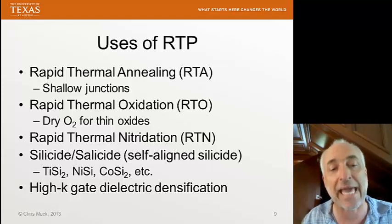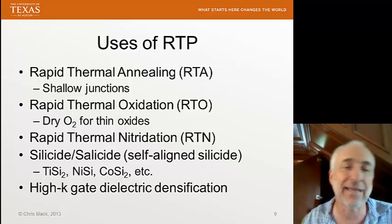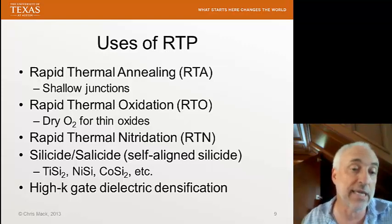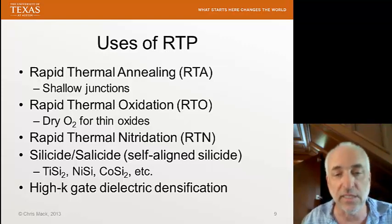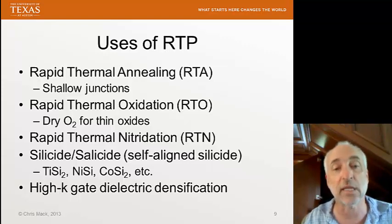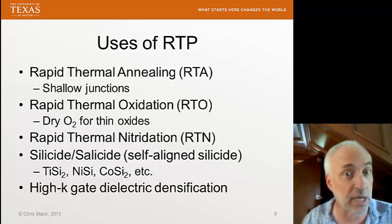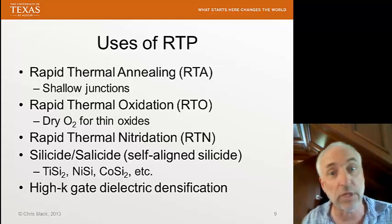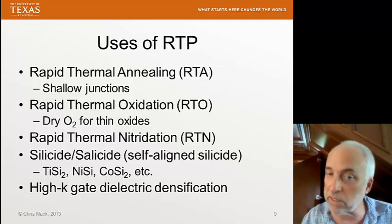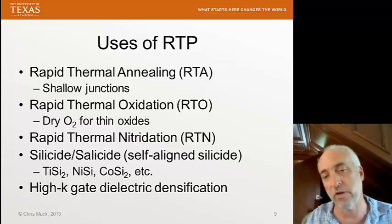Finally, we sometimes deposit a dielectric in a separate process and then use a high-temperature thermal process to densify it, achieving better electrical properties for the gate oxide. High K — meaning high dielectric constant — denser films are advantageous for the proper operation of a scaled MOS transistor.